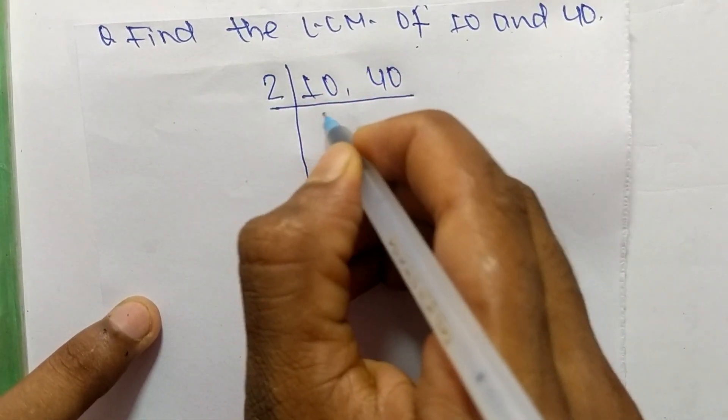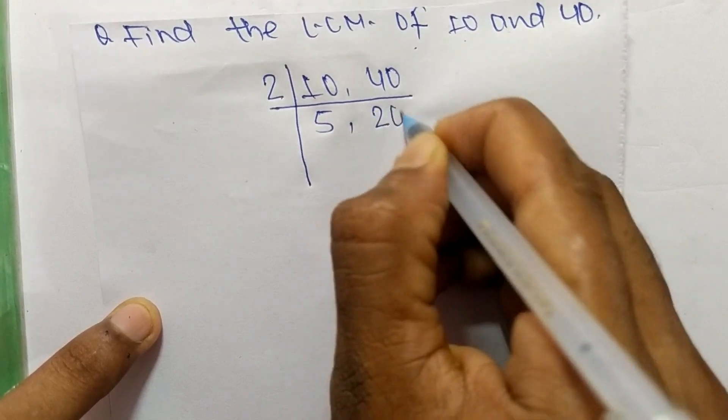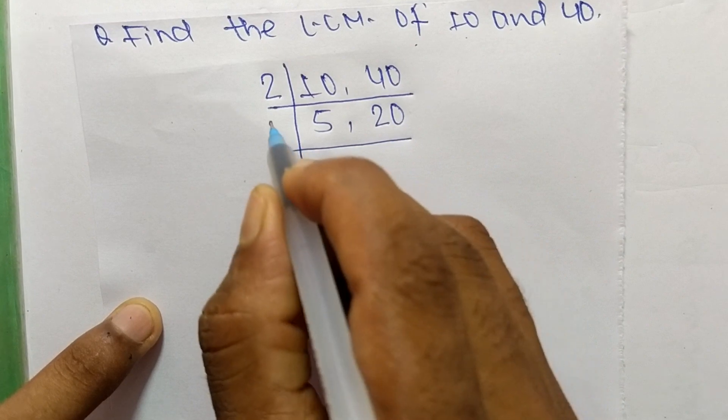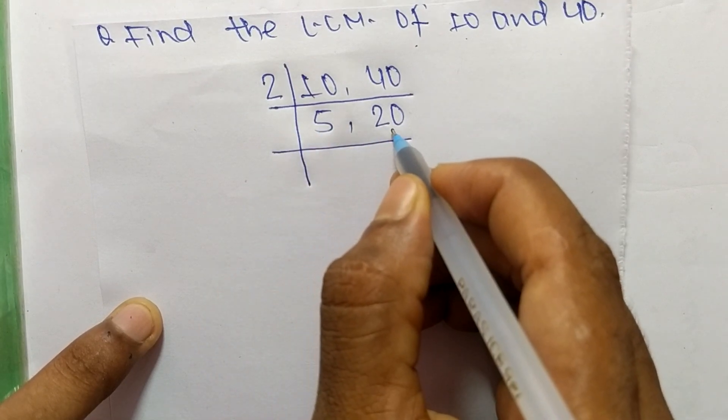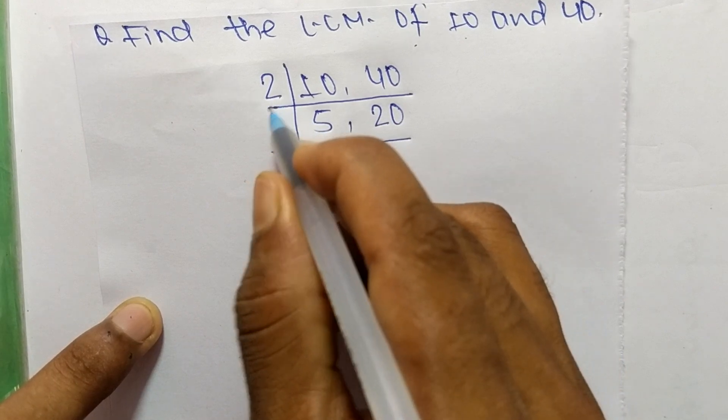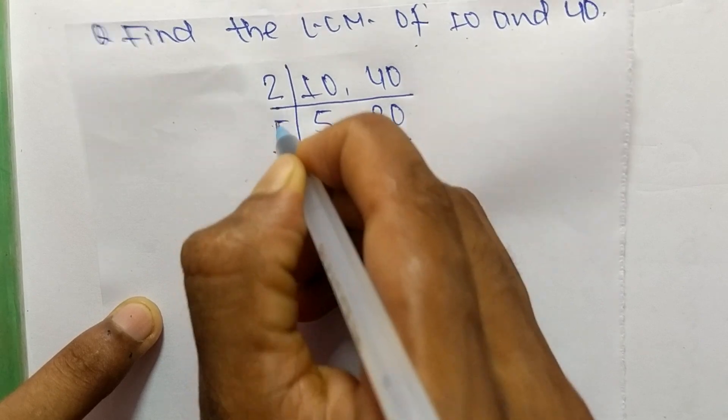2. So 2 times 5 means 10 and 2 times 20 means 40. Now 2 can divide 20 but can't divide 5, so we choose the number greater than 2 which can divide 5 and 20. The number